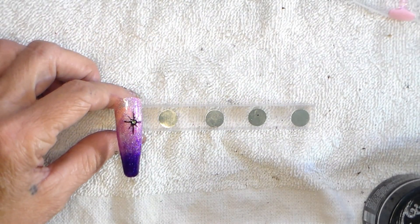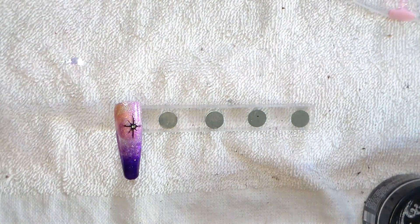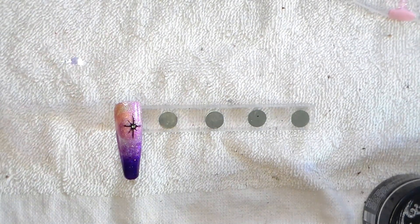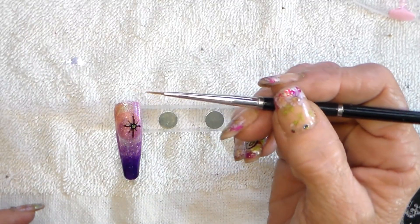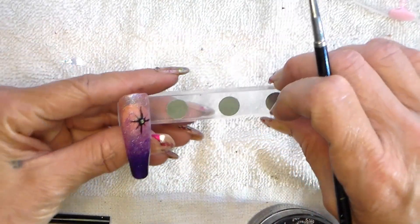Now I'm gonna use a smaller side for the silver because I'm just gonna put the silver kind of everywhere.